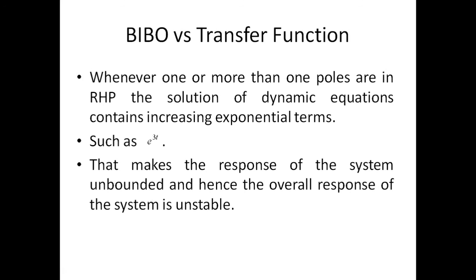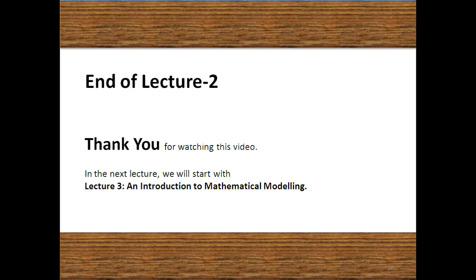Whenever one or more poles are in the right-hand side, the solution of the dynamic equation contains increasing exponential terms such as e^(3t) or e^(at) with positive a, making the response unbounded and hence the overall system unstable. This is why even a single pole on the right-hand side — alongside many stable poles — causes the entire system to be unstable. Thank you for watching. In the next lecture we will start with an introduction to mechanical modeling.